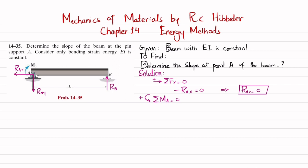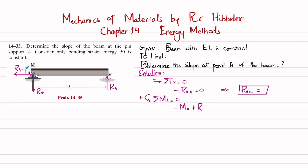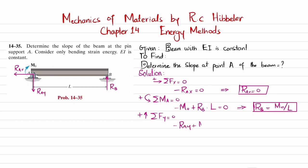Next, taking the sum of all moments about point A equal to zero, with counterclockwise moments positive: M₀ is clockwise so it contributes −M₀, and RB acts at perpendicular distance L counterclockwise, giving +RB·L = 0. Therefore RB = M₀/L. Then from the sum of forces in the y-direction equal to zero, with upward positive: −RAy + M₀/L = 0, so RAy = M₀/L.